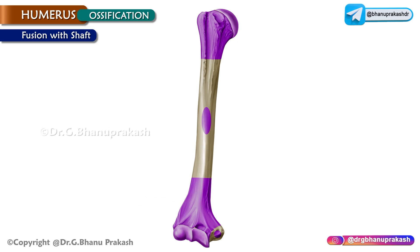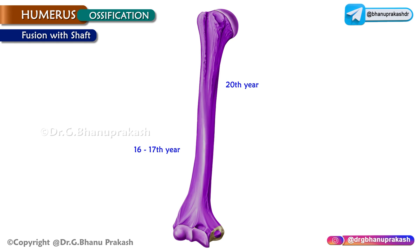Fusion with the shaft: the upper end joins the shaft by the 20th year, the lower end joins by 16 to 17 years, and the medial epicondyle joins the shaft by 18 years.